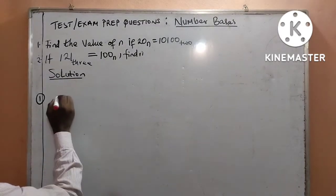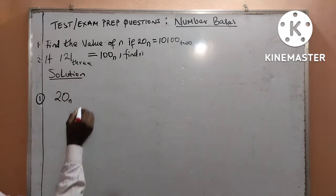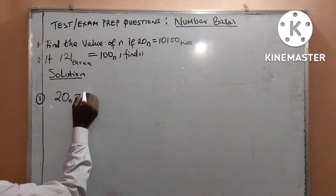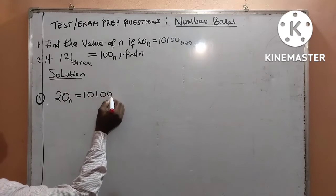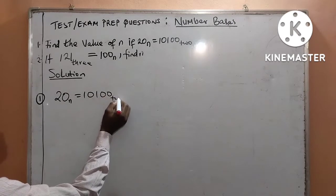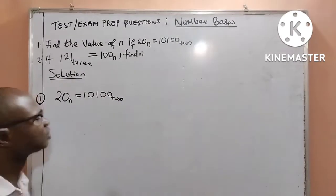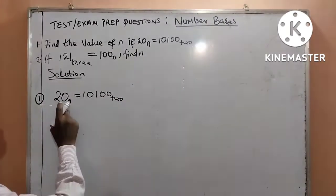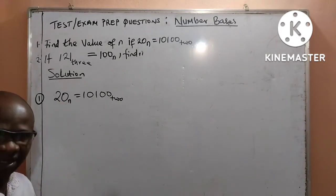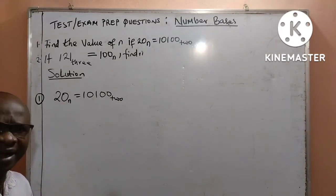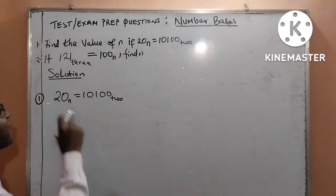Number 1. We are given 20 base N equal to 10100 base 2. This is in base N — we don't know what N is — and we are required to find the value of N.